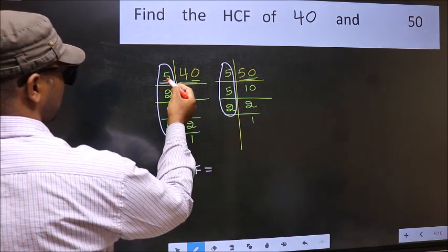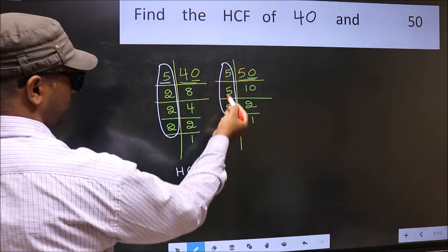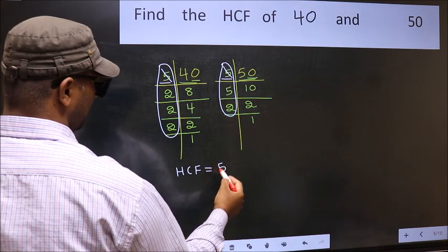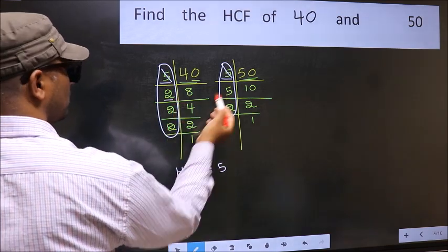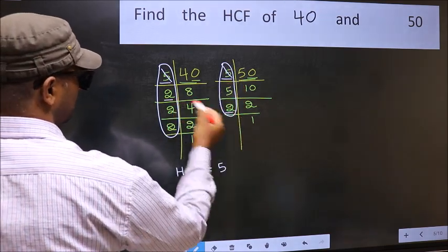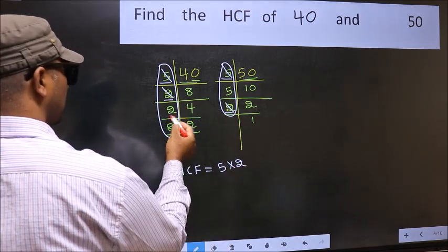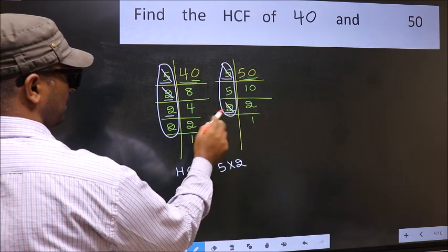Starting with the number 5. Do we have 5 here? Yes. So cut 5 right here. Next number 2. Do we have 2 here? No.